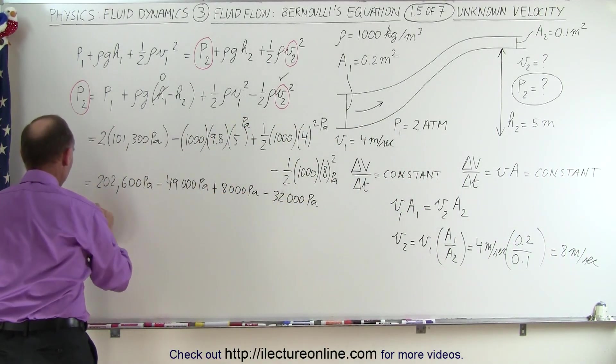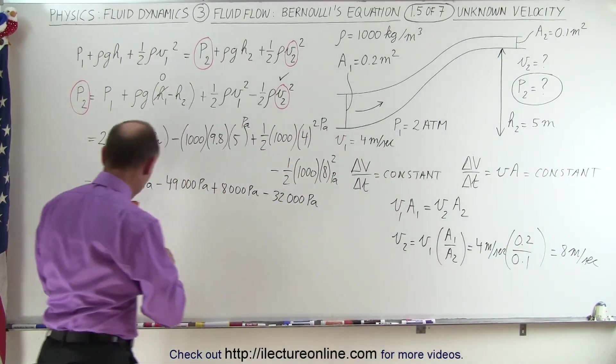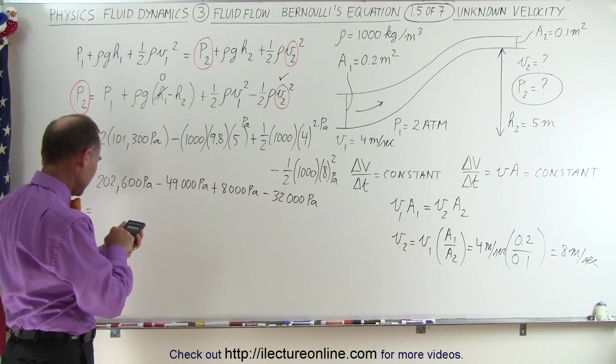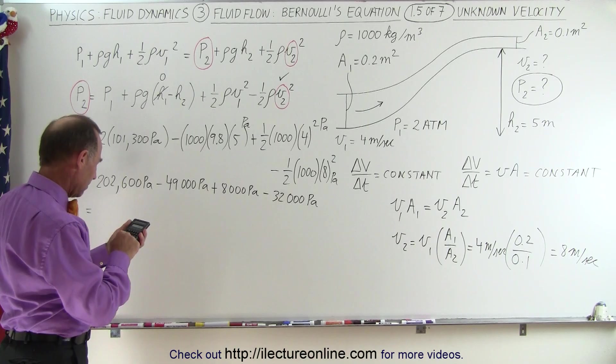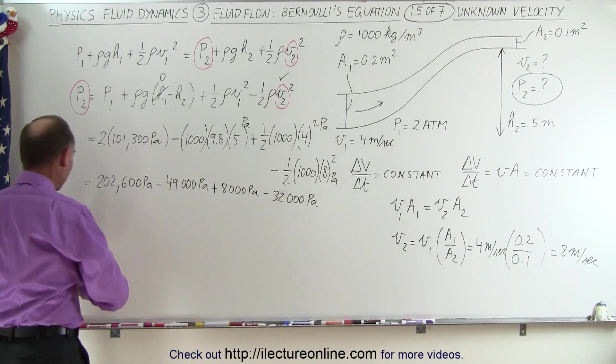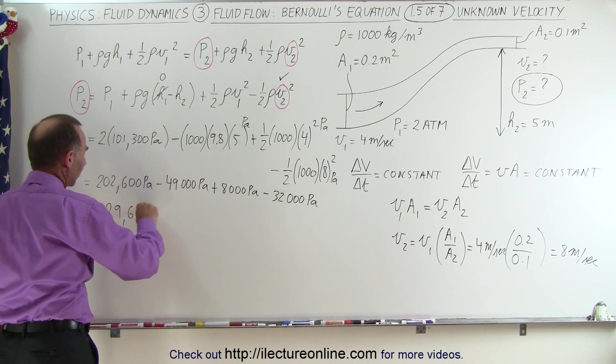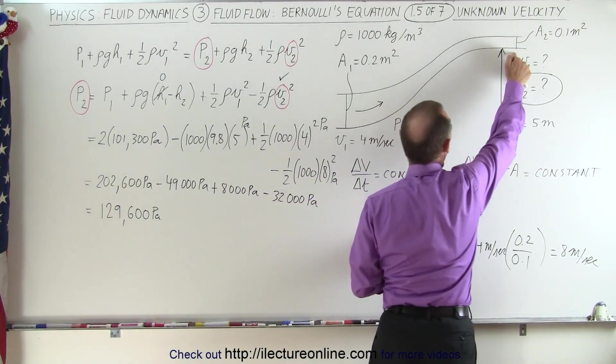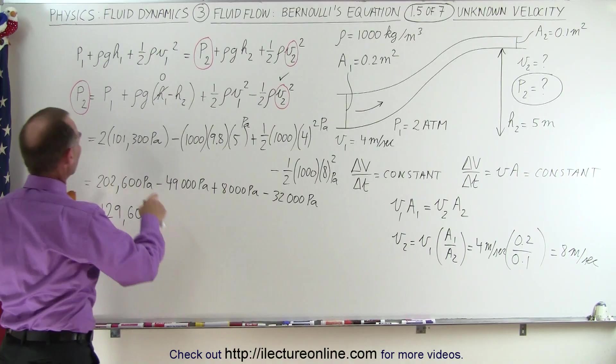Okay now we can add all this up and let's see what we get. So we get 202,600 minus 49,000 plus 8,000 and minus 32,000 equals, and that gives us 129,600 pascals.